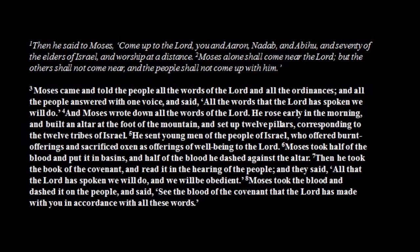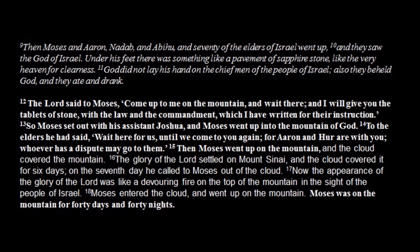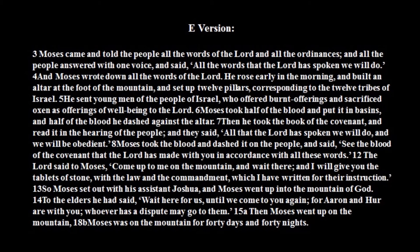For P, the event at Sinai means Moses goes up the mountain only to receive the instructions for constructing the tabernacle, in chapters 25 to 31, in which God will dwell among the Israelites and give Moses laws. The P narrative begins at Exodus 19, verse 1, where they camp in the wilderness of Sinai, then jumps all the way to chapter 24 verse 16, where the glory of the Lord settled on Mount Sinai and the cloud covered it for six days. On the seventh day God called to Moses out of the cloud. Moses entered the cloud and went up the mountain — and then in chapter 25 gets the instructions for building the tabernacle. For P, the laws don't start until the beginning of Leviticus.